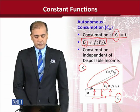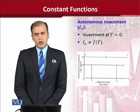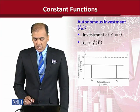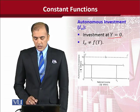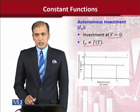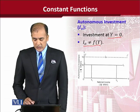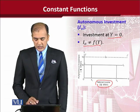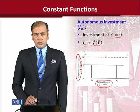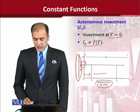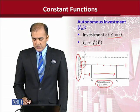Autonomous investment is yet another example of constant functions. It is the investment which is independent of the level of national income. The diagram is self-evident: we have national income on the x-axis and autonomous investment on the y-axis. Its value is fixed at 10, and regardless of the changes in the level of national income, it remains at the same level — that is, 10.